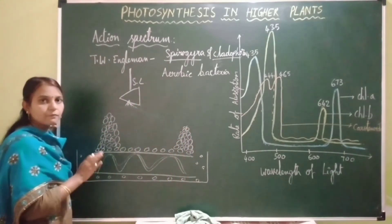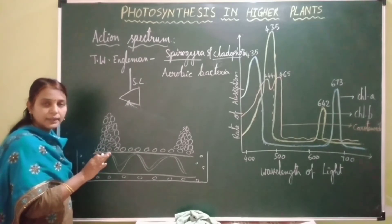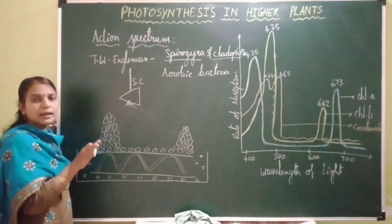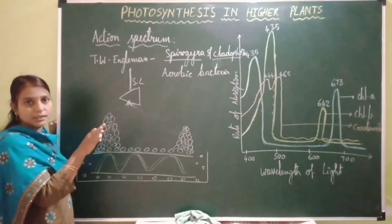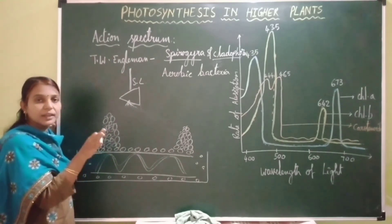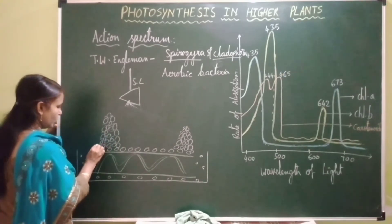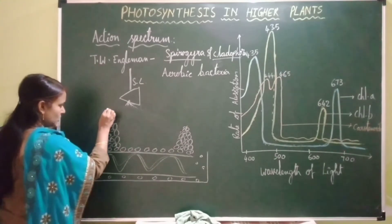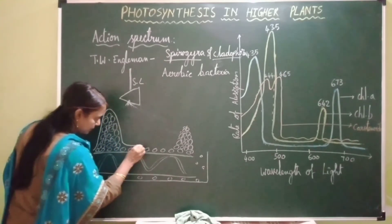In the red region also, accumulation of aerobic bacteria was more because of the release of more oxygen in these two regions. Engelmann discovered that wherever the amount of oxygen released is more, there the rate of photosynthesis is more. This is the action spectrum.